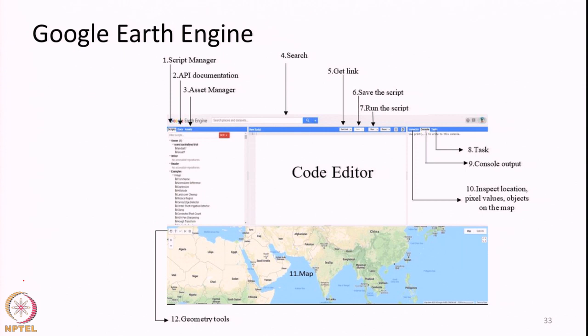It also has the capability to upload your own dataset - say you collected data from ground and want to merge it with satellite data, that is possible. You can upload data to your own portal within the cloud platform, analyze it, and get results. For most academic and research purposes, they provide free access. You need to first register - once you have a Google account, you can register and request access. If you are from an academic or research organization, access is typically granted within a few days.